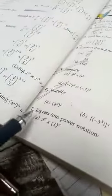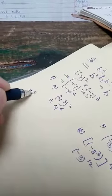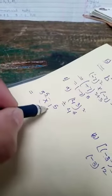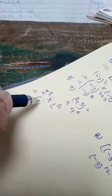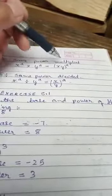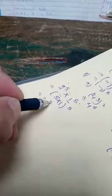Next is question 7: express in power notation — we have to write in the form of power only, combining when given. For number A: 5 to the power 5 into 1 to the power 5. The bases are different but the powers are the same — both are 5. So we apply rule 4: multiply the bases and take one common power. 5 times 1 equals 5, so the answer is 5 to the power 5.